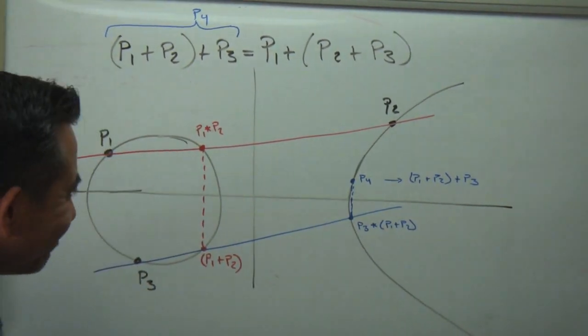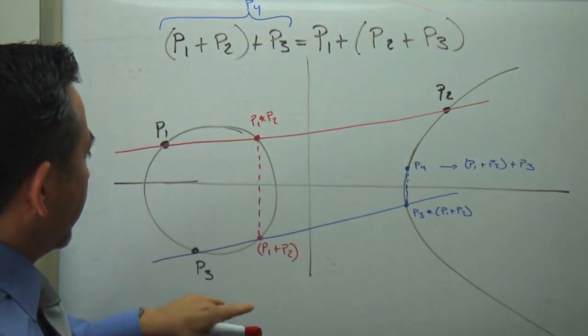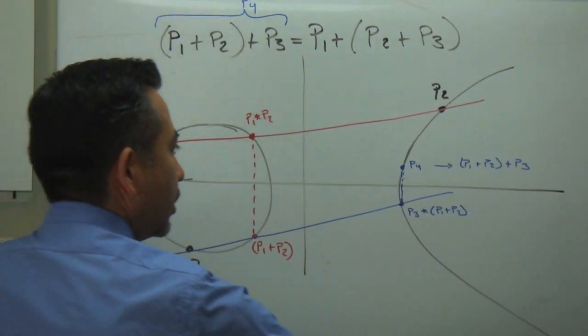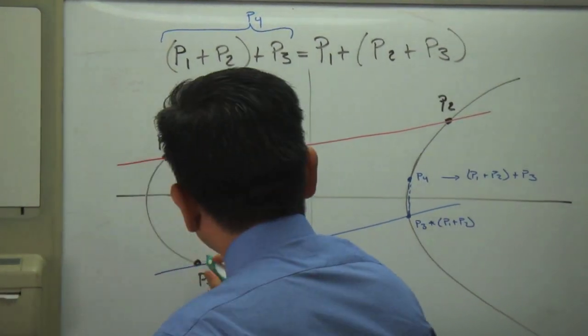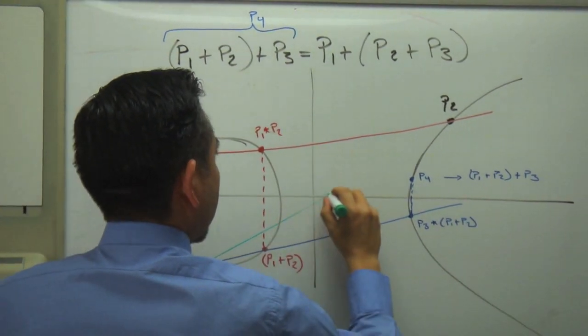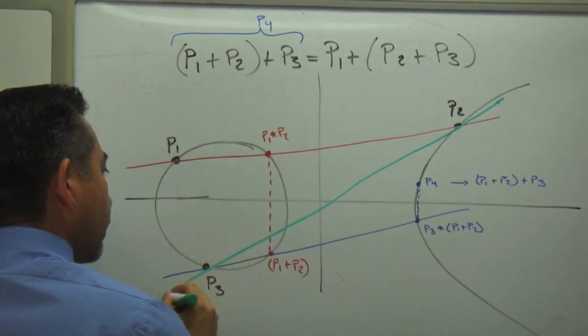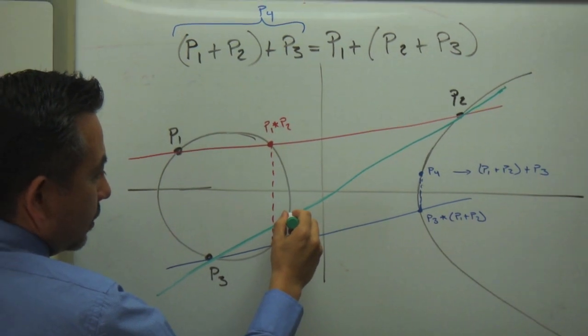Now, I wanted to add P2 to P3. So P2 to P3, we should arrive to the same point if this is true. So to do, I have to make this line, so I'm going to go something like this. Perfect. And I intersect at this point.